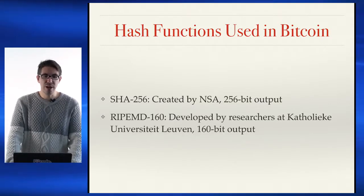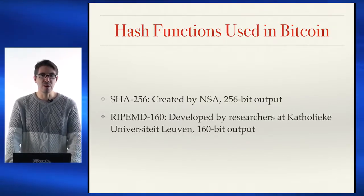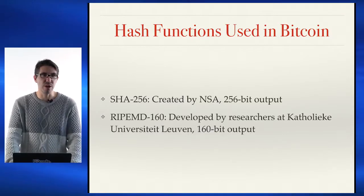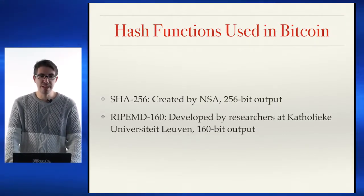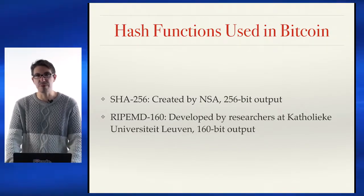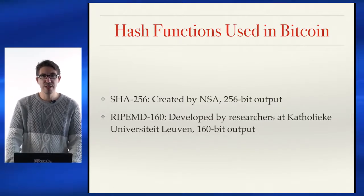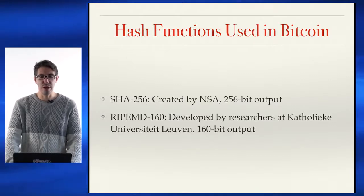There are a few hash functions used in Bitcoin, and many variations of these are used on other blockchain technologies. SHA-256 and RIPEMD-160 are both used very often for different purposes in Bitcoin, and all of these are good cryptographic hash functions that don't have any major known vulnerabilities.